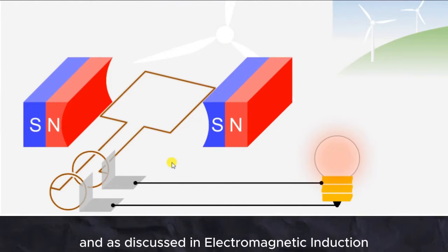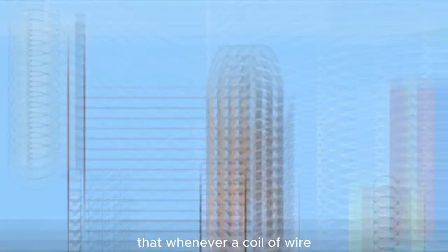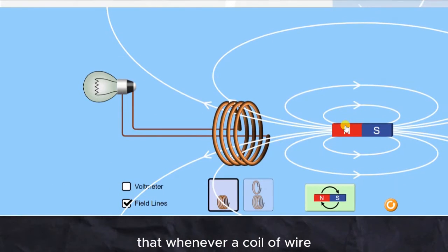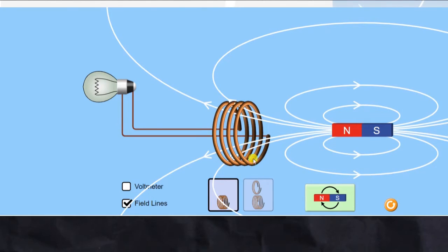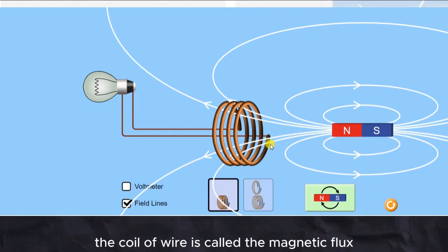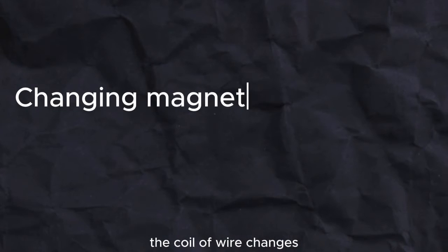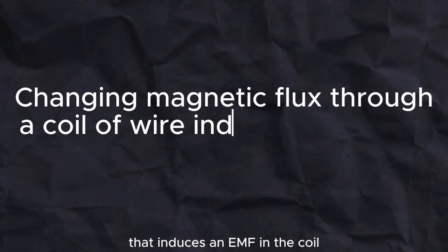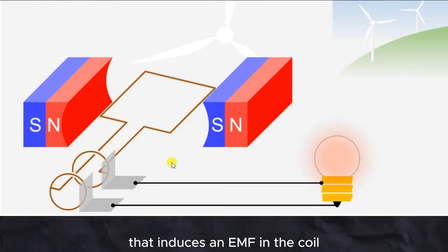As discussed in electromagnetic induction, whenever a coil of wire is inside a magnetic field, the number of magnetic field lines passing through the coil is called the magnetic flux. And if the magnetic flux through the coil changes, that induces an EMF in the coil of wire.